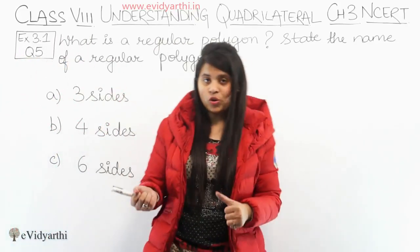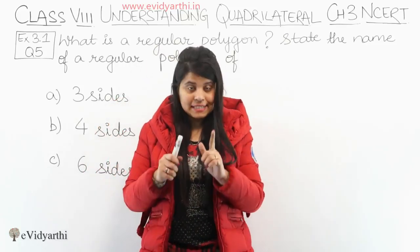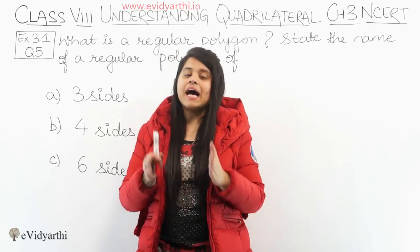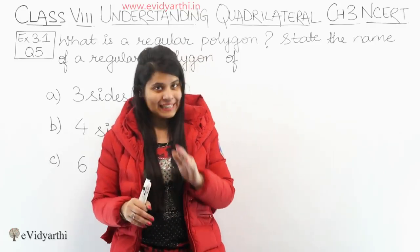We have done this in the introduction. So a regular polygon is one whose all sides are equal, and also all the interior angles are equal. So that is a regular polygon.